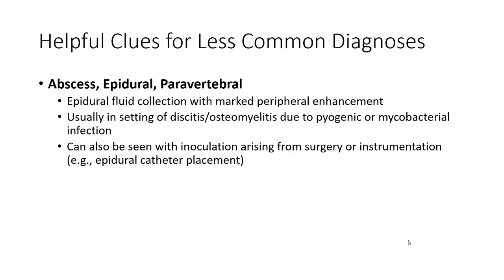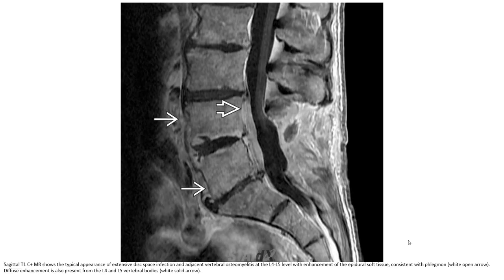Epidural abscess is an epidural collection with ring-like enhancement, usually in the setting of discitis or osteomyelitis due to pyogenic or mycobacterial infection. It can also be seen with inoculation arising from surgery, instrumentation, or epidural catheter placement. Sagittal T1 post-contrast MRI shows a typical appearance of extensive discitis infection and adjacent vertebral osteomyelitis at the L4-5 level with enhancement of epidural soft tissue consistent with phlegmon, and disc body enhancement also present.